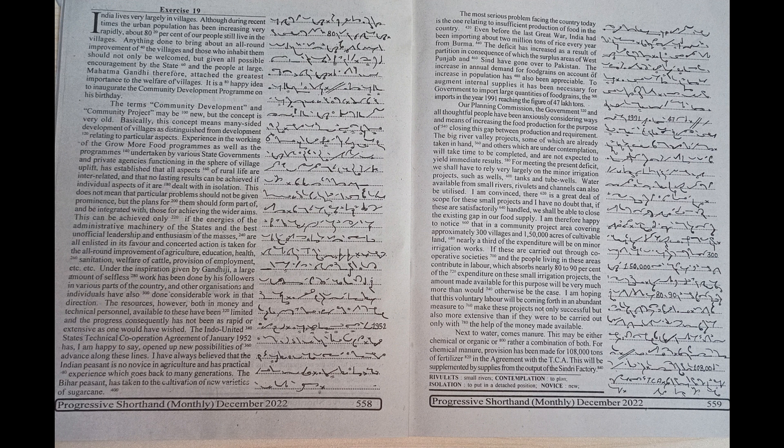Next to water comes manure. This may be either chemical or organic or rather a combination of both. For chemical manure provision has been made for 108,000 tons of fertilizer in the agreement with the TCA. This will be supplemented by supplies from the output of the Sindri factory.